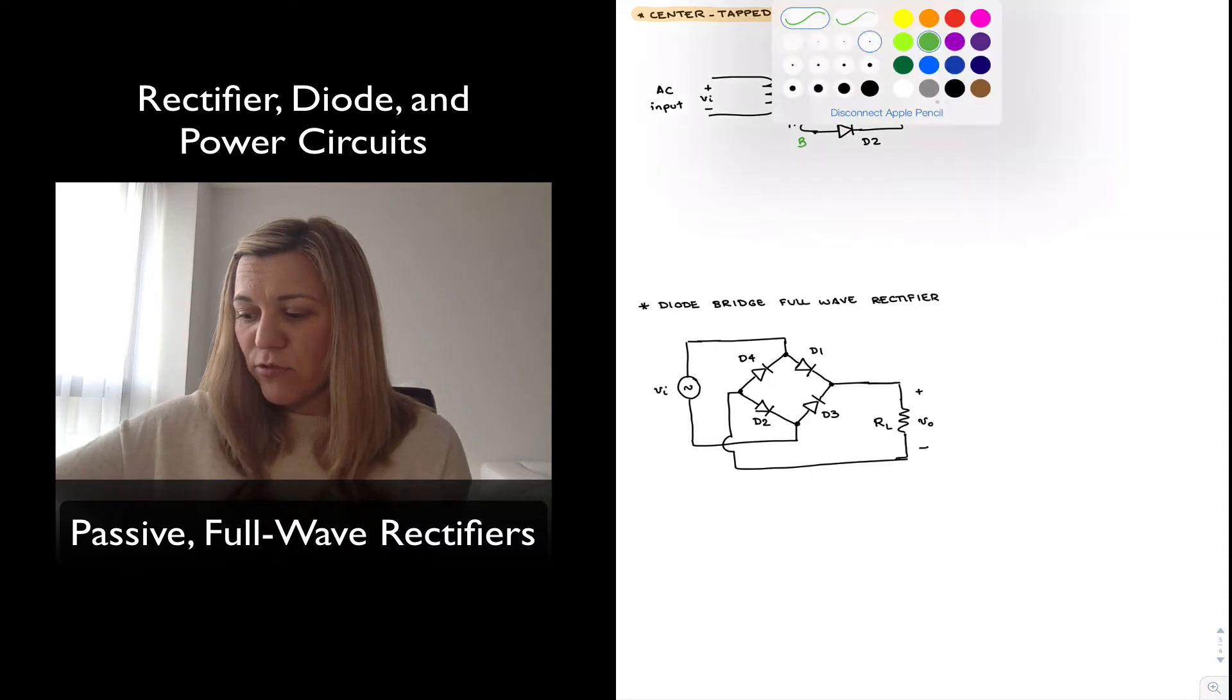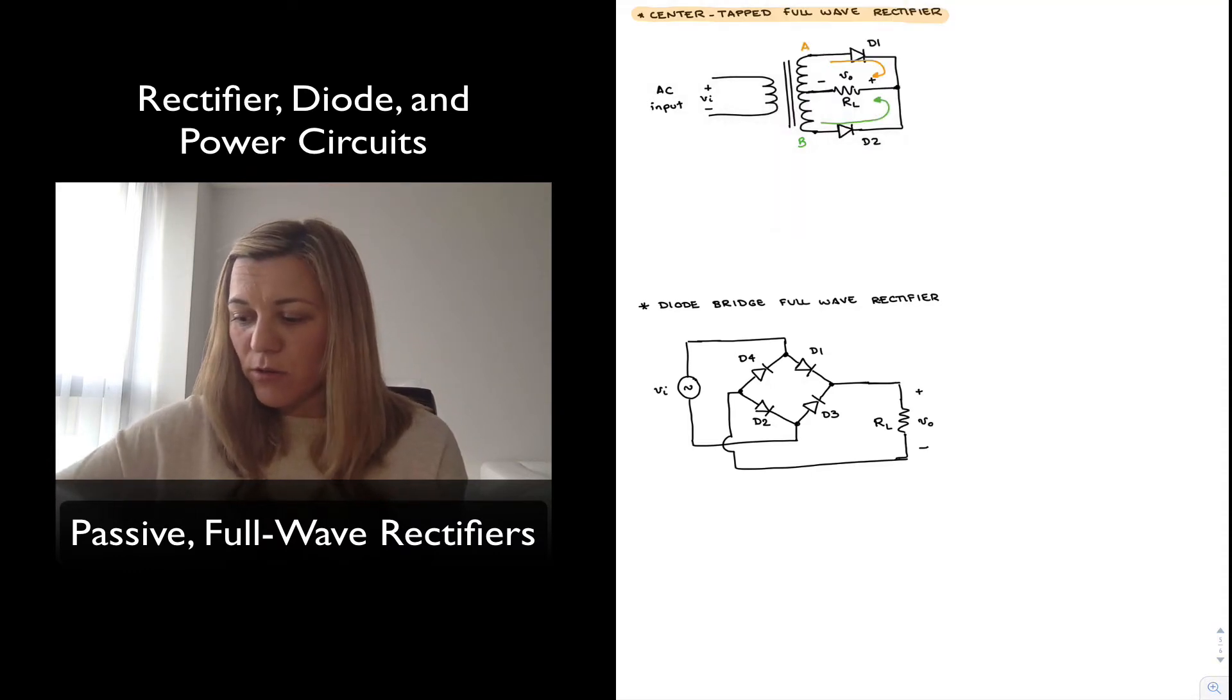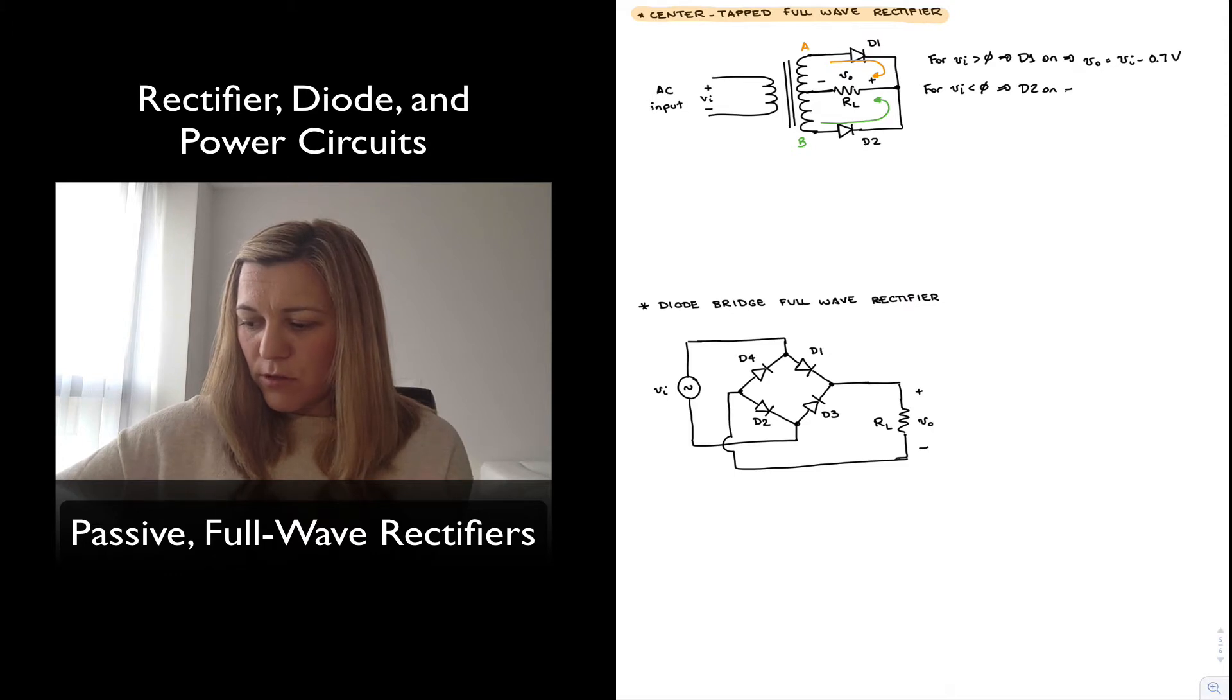If we wanted to write down what's going on, we would say that for v_in positive, we have that D1 is the diode that turns on and v_out is equal to v_in minus one diode drop. For negative v_in values, D2 is the one that turns on and the output voltage becomes equal to negative v_in minus 0.7.